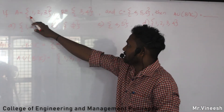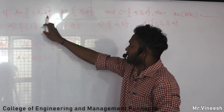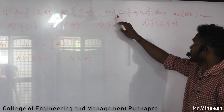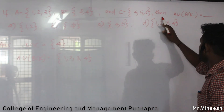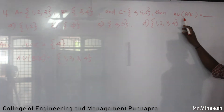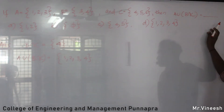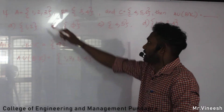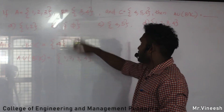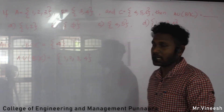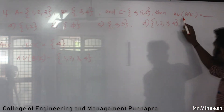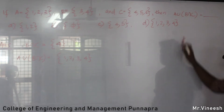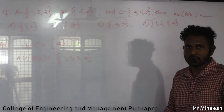If set A is equal to {1, 2, 3}, set B is equal to {3, 4}, and C is equal to {4, 5, 6}, then A∪(B∩C) is equal to what? We are working on set A, set B, and set C.